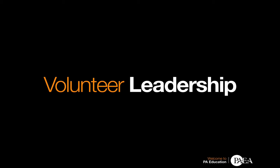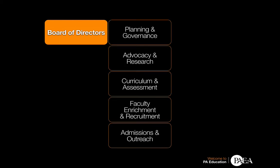It is worth taking a quick tour of our volunteer structures so that you have an idea of the wide array of volunteer opportunities available to you as a member of PAEA. We won't go into detail on these structures, but just provide a quick overview of the general design. Much more information is available on the PAEA website, including the specific purposes of the groups, as well as their current membership and projects. The principal governing body of PAEA is the Board of Directors. Five volunteer divisions, grouped by topic, report to the Board: Planning and Governance, Advocacy and Research, Curriculum and Assessment, Faculty Enrichment and Recruitment, and Admissions and Outreach. Under each division is a set of councils which focus on specific projects.